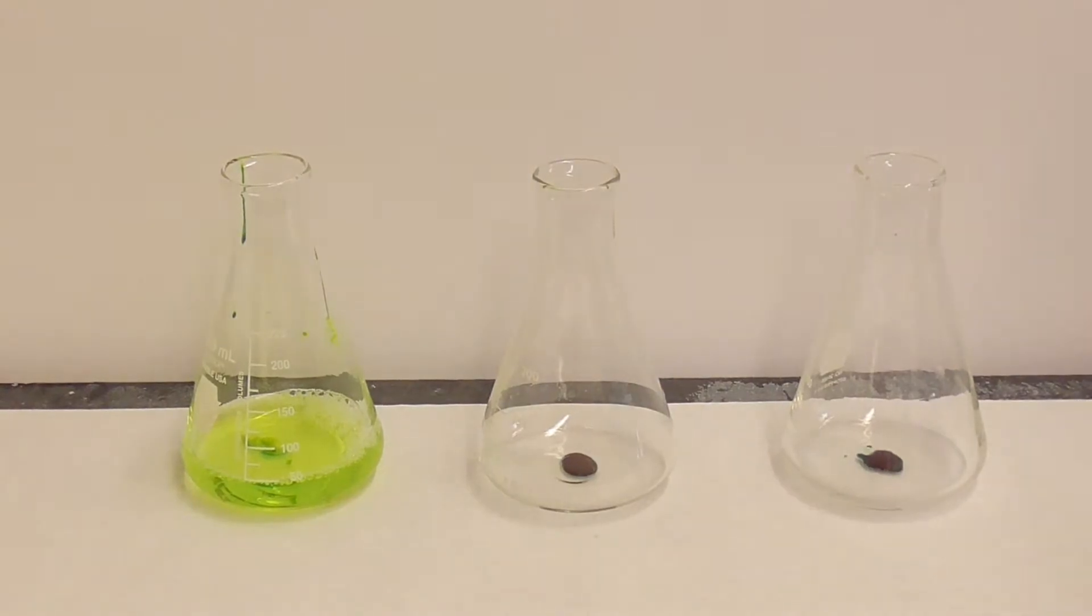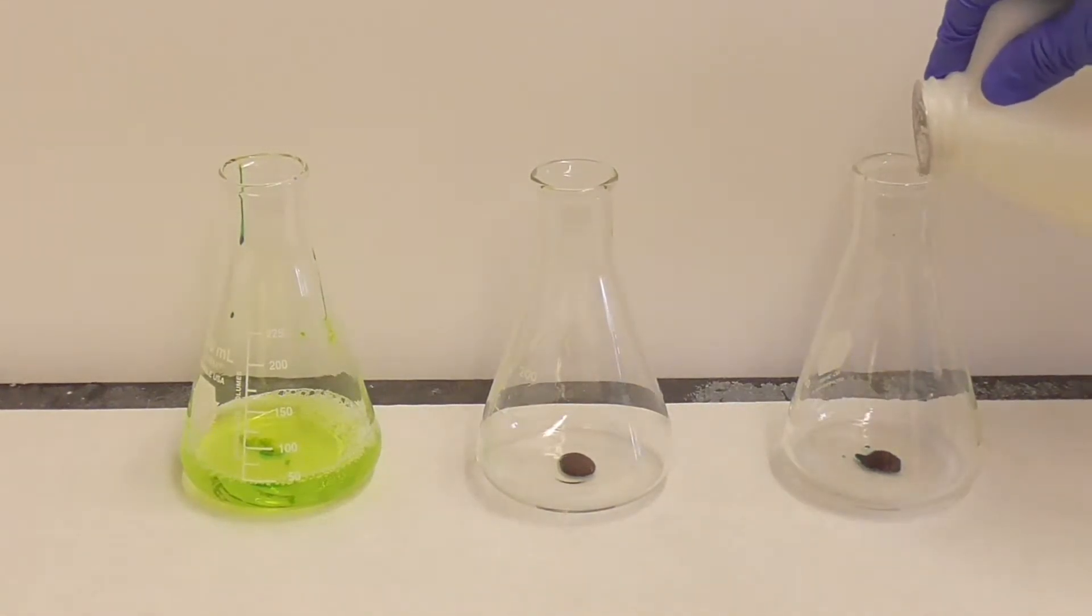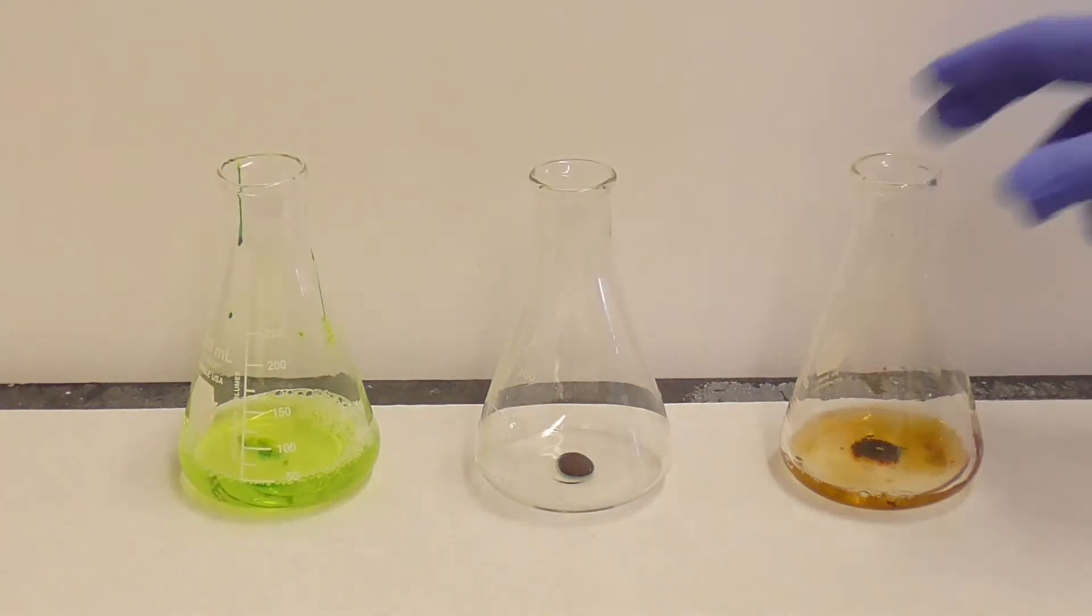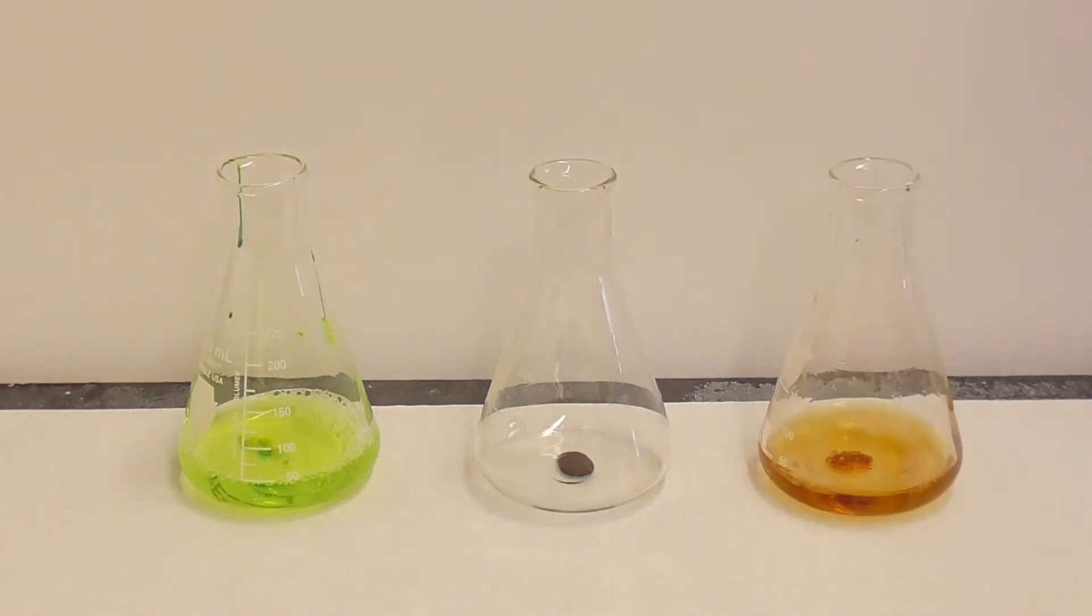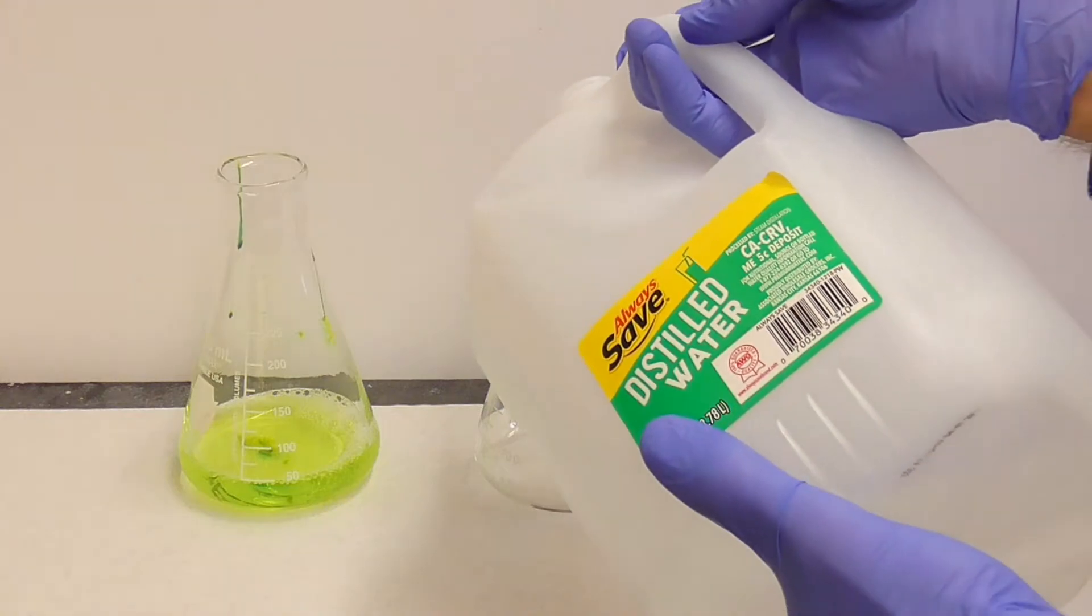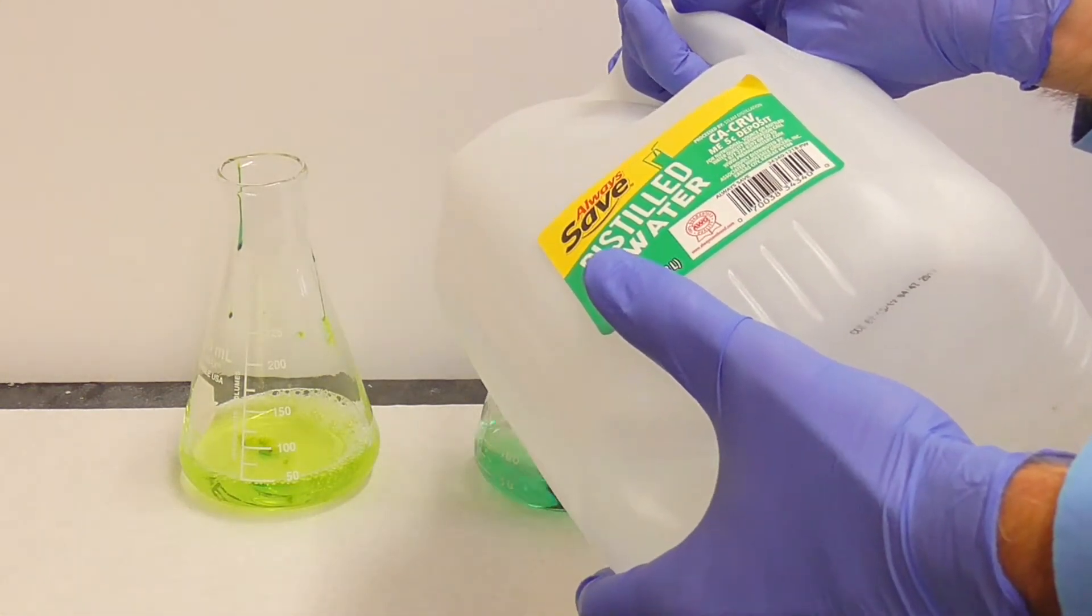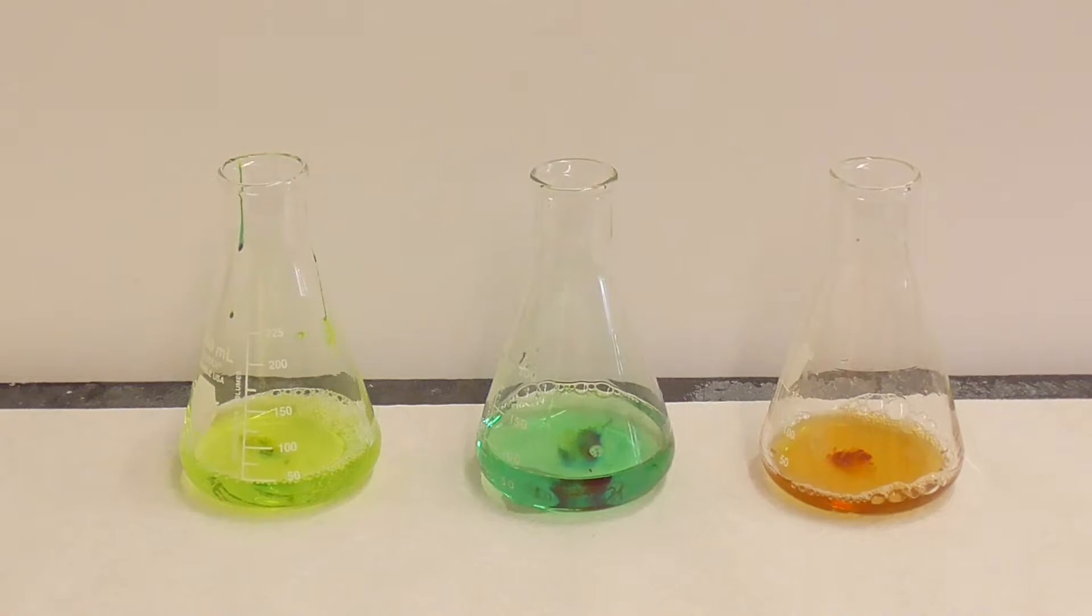Second I'll add some ammonia which has a high or basic pH to the third flask. In this case we see an orange color develop. Finally, I'll just add some distilled water to the middle flask. In this case we get a nice green color.